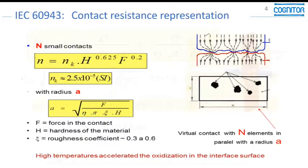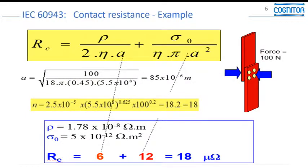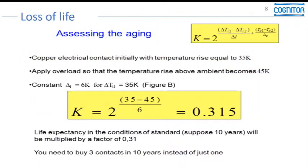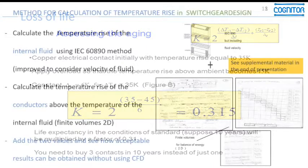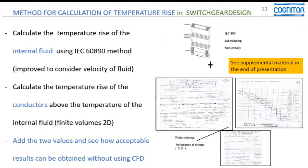This is one empirical formula. If you apply the constriction resistance — something like 6 micro-ohms — the partial related to aging, where the temperature rise is now 45 degrees, and if you use this equation to evaluate and assess aging, you will see that a small 10-degree increase in temperature rise would produce a significant loss of life.